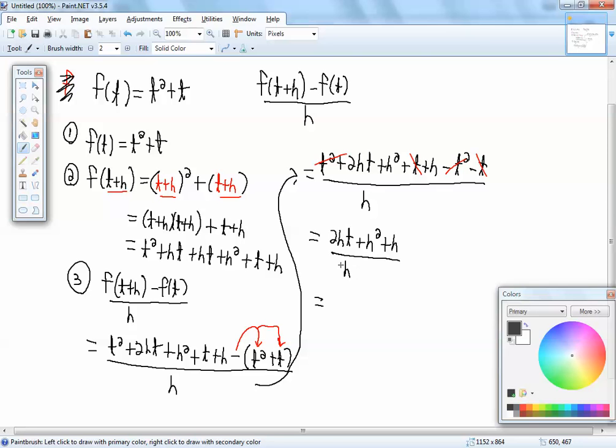Now, your main goal is to get rid of the H in the denominator. That's our end goal in this. And I notice up on top that all my terms have an H. So I can factor an H out. And that gives us 2T plus H plus 1, all over H.